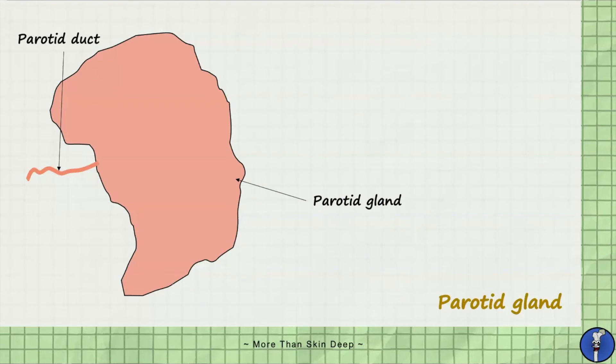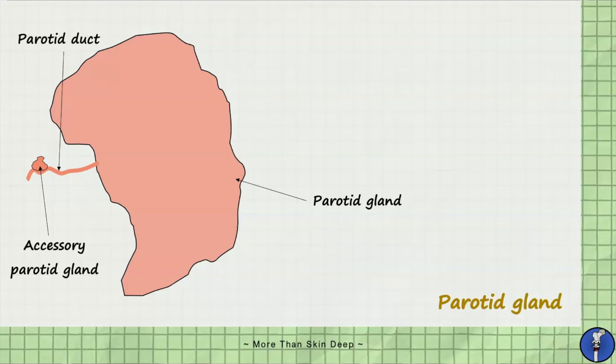Before we take a closer look at the anatomical relations of the parotid gland, it's important to know that accessory parotid glands are relatively common and are seen in approximately 20% of the general population. Accessory parotid glands are considered separate but in close proximity to the main parotid gland and can be located on the superior aspect of the parotid duct or on the lateral aspect of the masseter muscle.